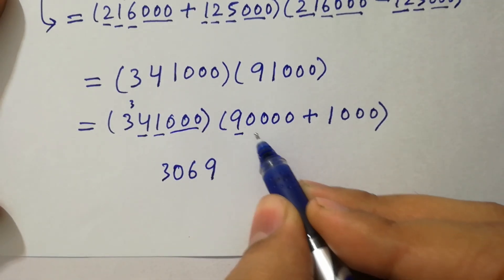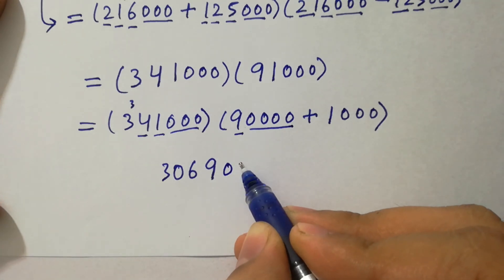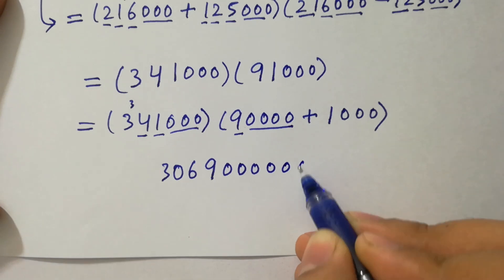Here we have 3 times 0s. Here 4 times 0. We have here 4 plus 3 is 7. 7 times 0s: 1, 2, 3, 4, 5, 6, 7.